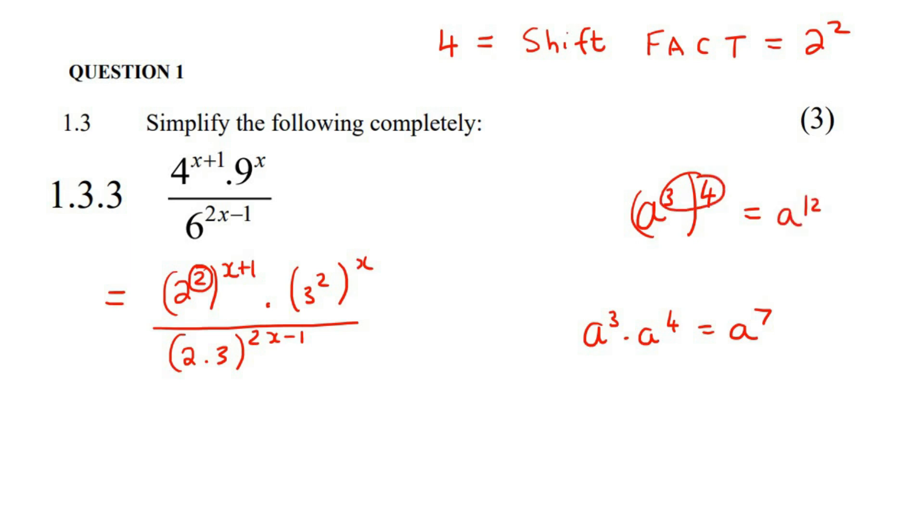But what you would have rather done here is multiply. Okay, so we are going to multiply this x plus 1 with this 2, and we're going to multiply this x with this 2, and then we're going to multiply this with the 1 that's over there and the 1 that's over there, because 2 to the 1 is still 2, and 3 to the 1 is still 3.